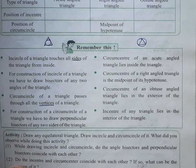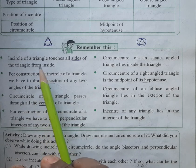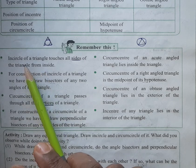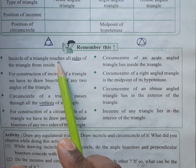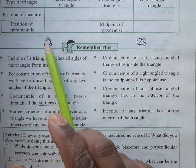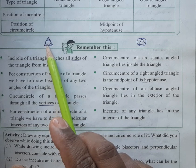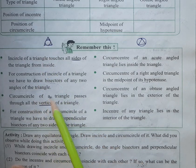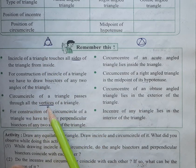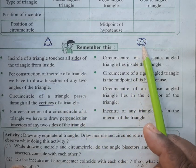Hello everyone, today we will study points to remember about the incircle and the circumcircle. The incircle of a triangle touches all sides of the triangle from inside — you can see here all sides are touching the circle. The circumcircle of a triangle passes through all vertices of the triangle.